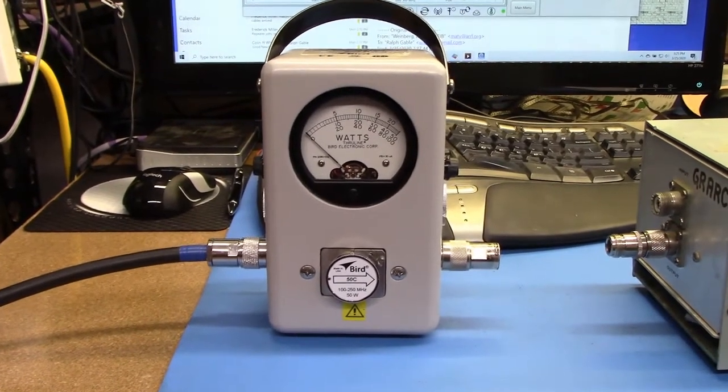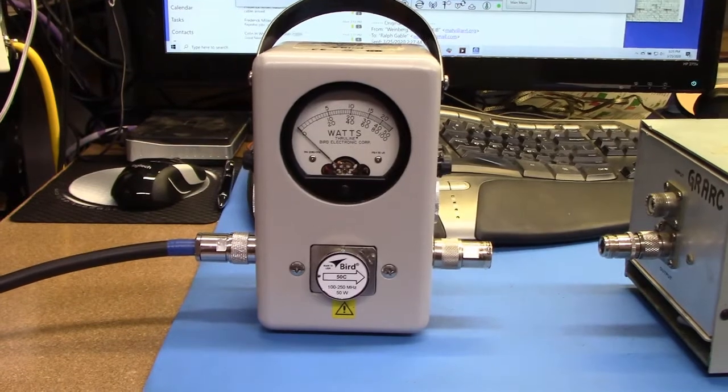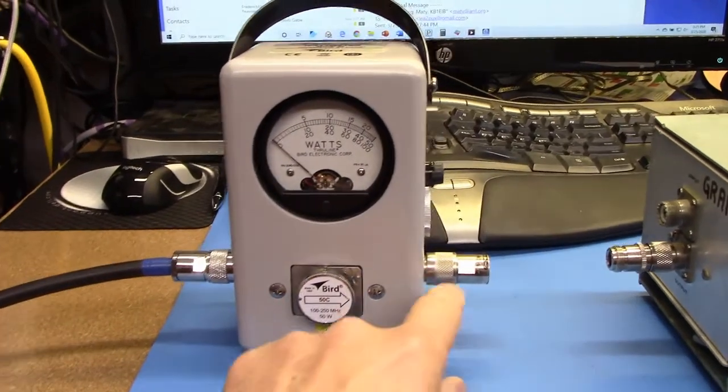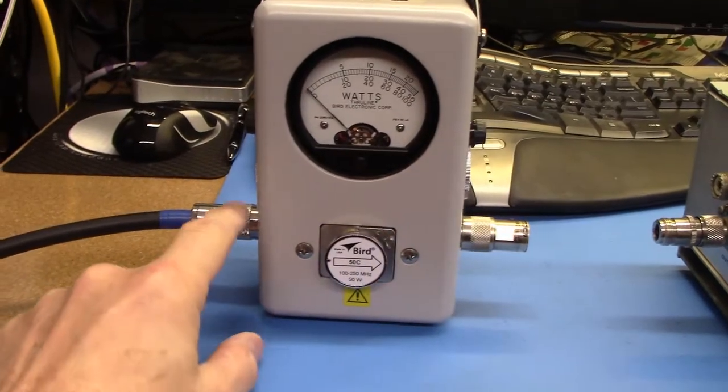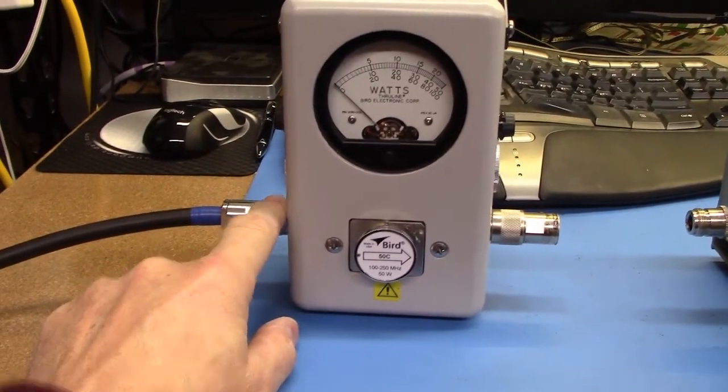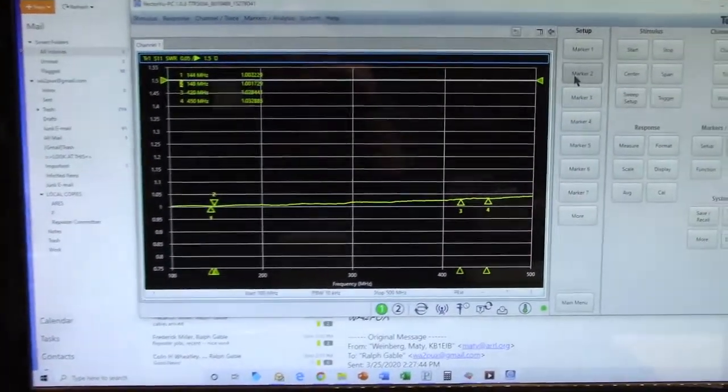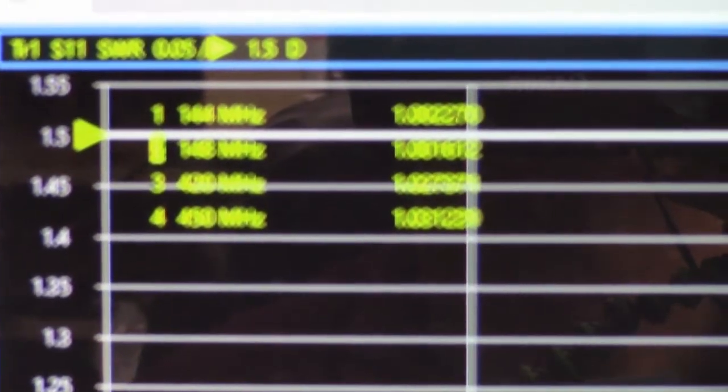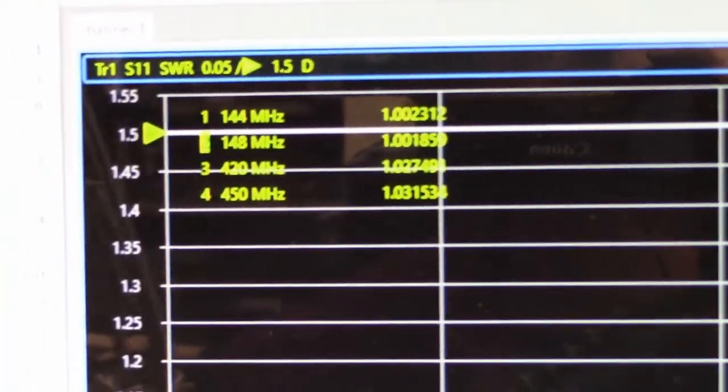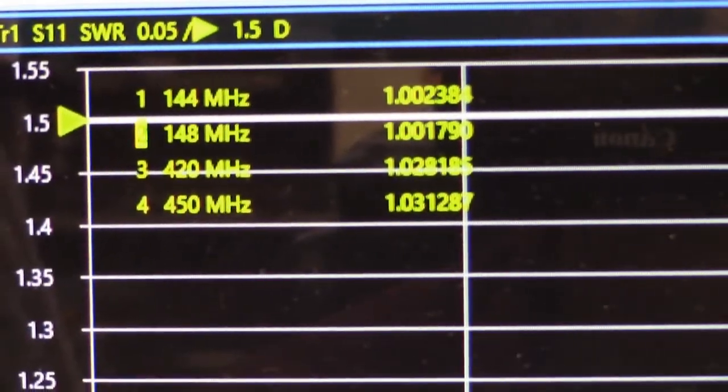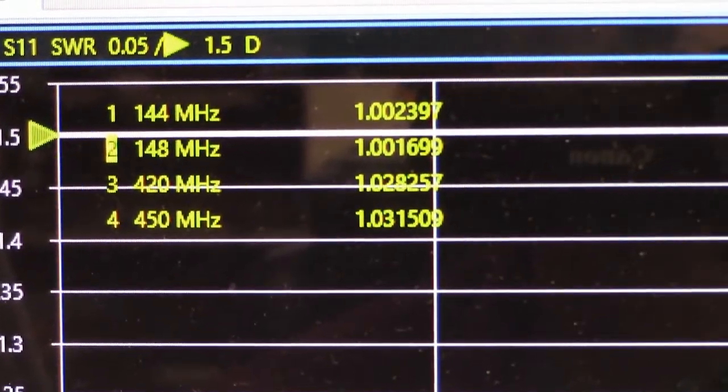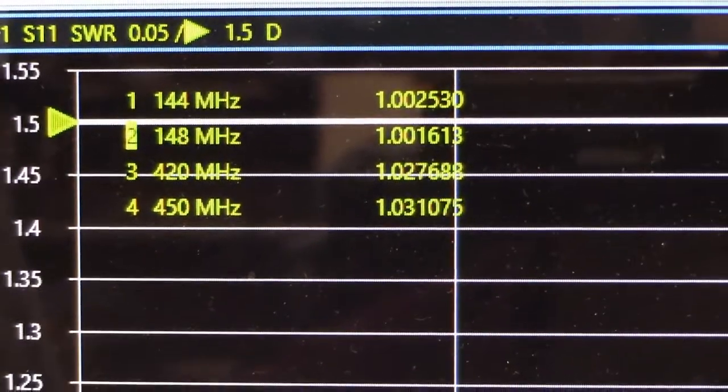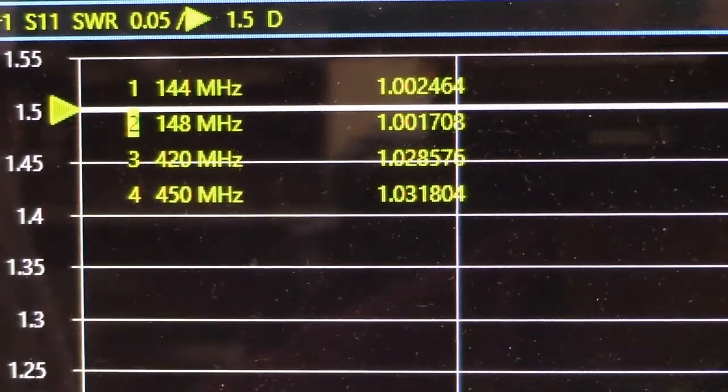As a sanity check, I thought I would break out my Bird 43 watt meter and do the same test. Here I have my calibrated 50 ohm load, and here I have my VNA connected. Let's zoom in on these results. You can see the line is very, very flat. Look at that: 1.002 to 1 across the 2 meter band and 1.03 to 1 across the 70 centimeter band.